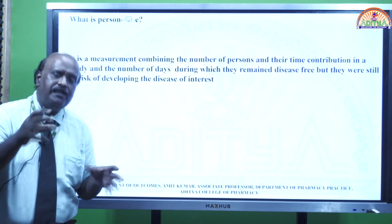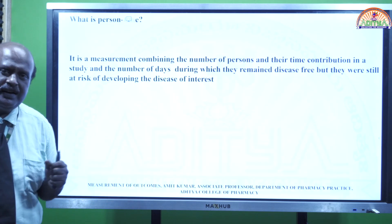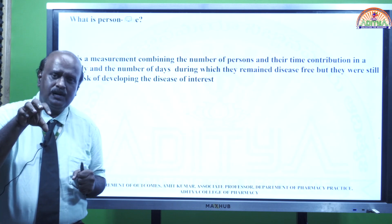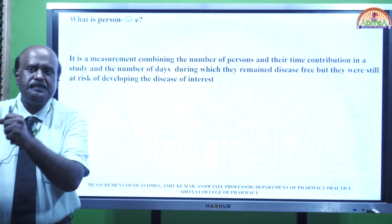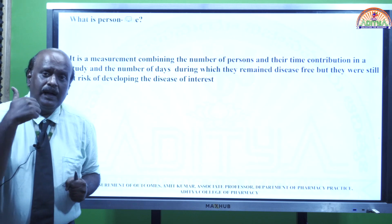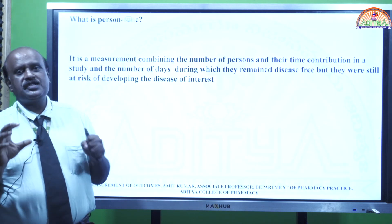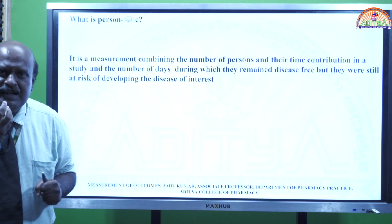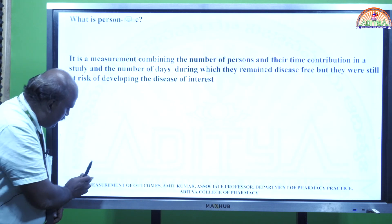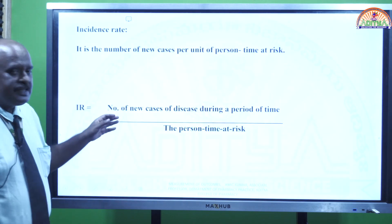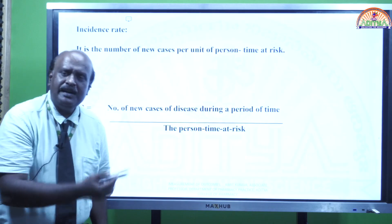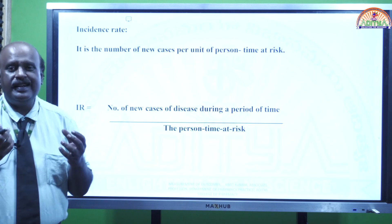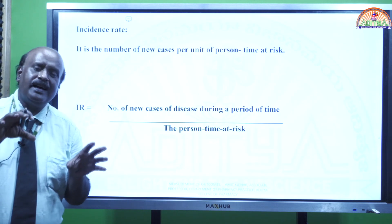Person-time at risk means the number of persons participating in the study, for how many days they participate, and during those days they should remain disease-free even though they are at risk of getting the disease. This person-time is taken into account while calculating the incidence rate — that is, new cases of disease during the period divided by person-time at risk, meaning the number of days a person contributes to the study while remaining disease-free.